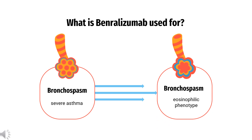Benrolizumab is indicated as a maintenance treatment of patients 12 years or older with severe asthma and an eosinophilic phenotype. The pathology of severe asthma with eosinophilic phenotype is also denoted as Th2-high phenotype. Patients with this phenotype are characterized by the expression of IL-5 and IL-13, airway hyperresponsiveness, responsiveness to inhaled corticosteroids, high serum IgE, and eosinophilia in blood and airway.